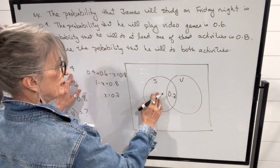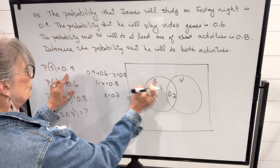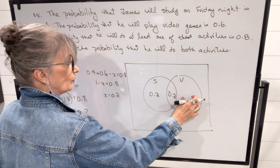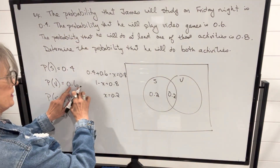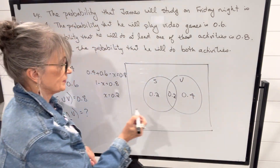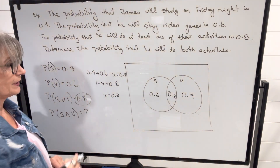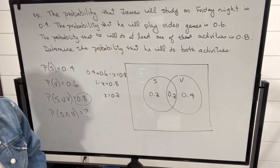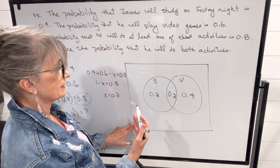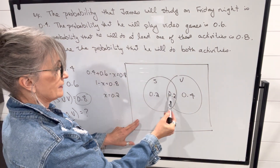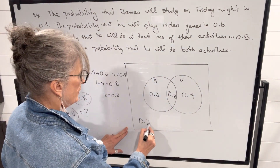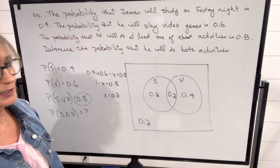The probability of only studying: 0.2 plus something has to equal 0.4, so that's 0.2. The probability of only playing video games is 0.6 minus 0.2, which is 0.4. You can see that all of these add up to the total probability of one or the other or both, which is 0.8. And if we want to know the probability of him doing none of those activities, we take 0.8 and subtract it from one to get the probability of him not doing video games or studying.